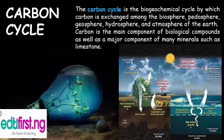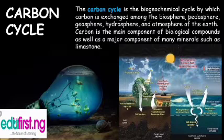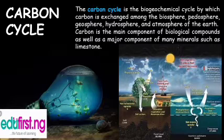Now let's move on to the carbon cycle. The carbon cycle is the biogeochemical cycle by which carbon is exchanged among the biosphere, pedosphere, geosphere, hydrosphere, and atmosphere of the earth. It is simply the way in which carbon is used on earth — the cycle that shows how carbon is utilized by nature. Carbon is the main component of biological compounds.